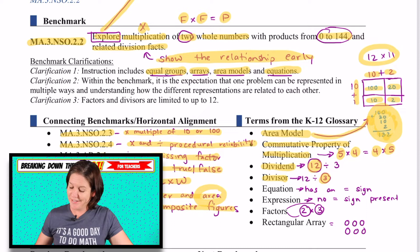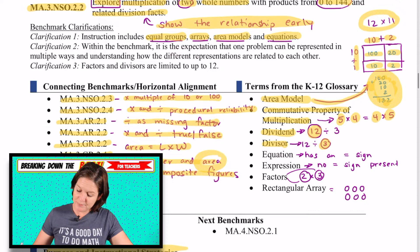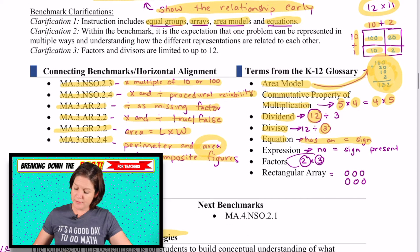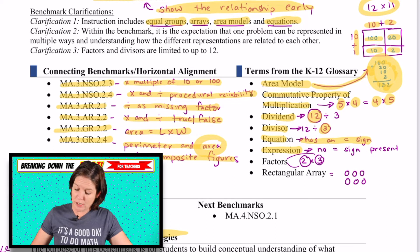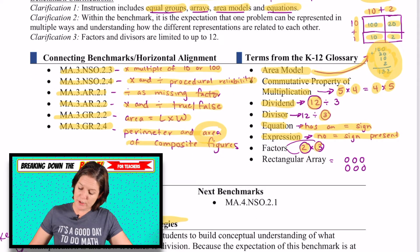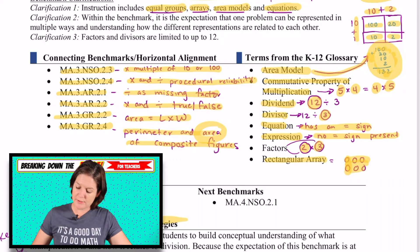Those are fancy words that we'll break down a little bit later in the Purpose and Instructional Strategies segment. Equation means that we have an equal sign. Expression means that we're doing something with numbers — adding, subtracting, multiplying, dividing — but there is no equal sign present. Factors are what you're multiplying: factor times factor. And a rectangular array for two times three would look like this.